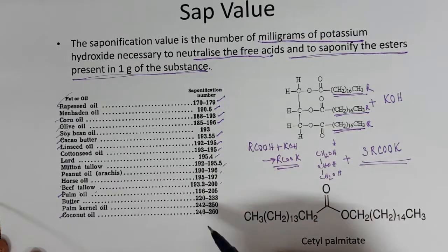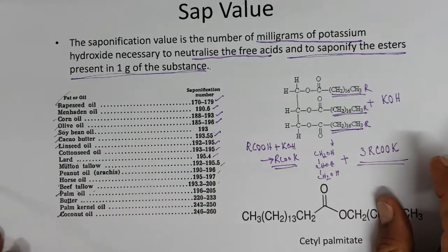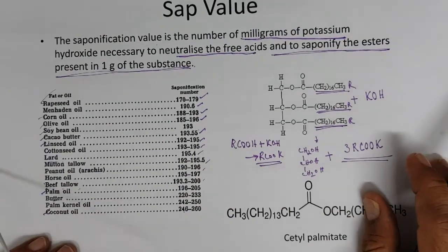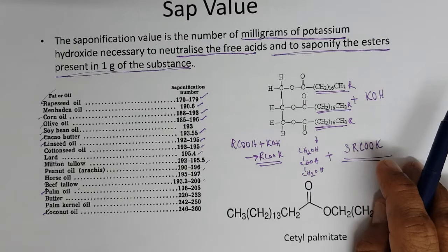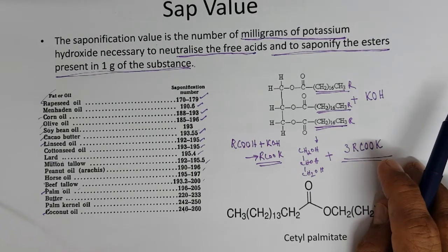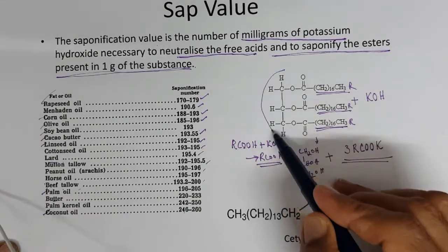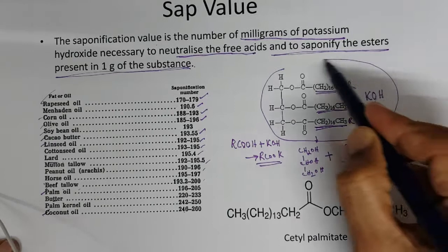What are vegetable oils chemically? Vegetable oils are esters — specifically, they are triglycerides. This is the triglyceride structure.